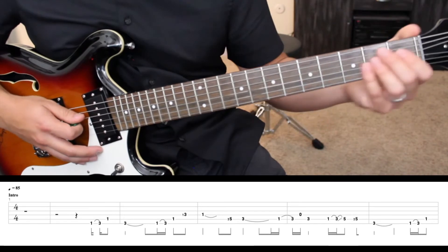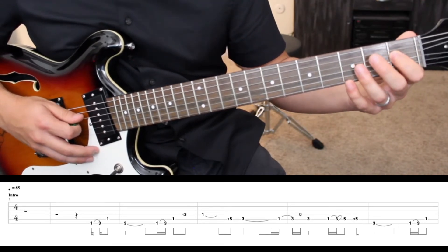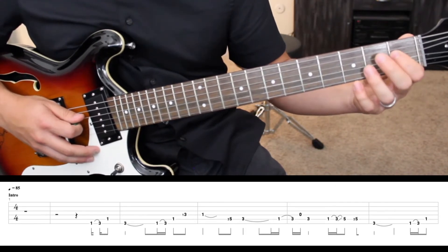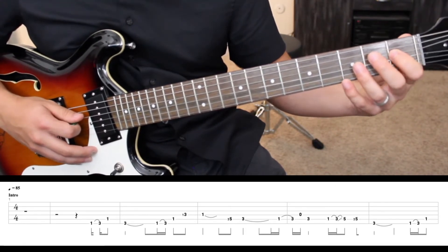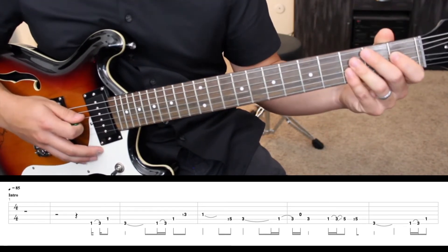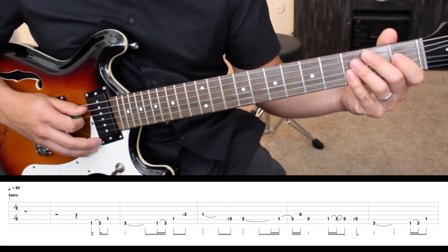After that we encounter our first grace note hammer-on. That little first fret note is the grace note. It's meant to be hammered to the third fret quick, so that we can only actually notate the third fret like this. This then takes us to that first fret fifth string on beat one of the next measure.